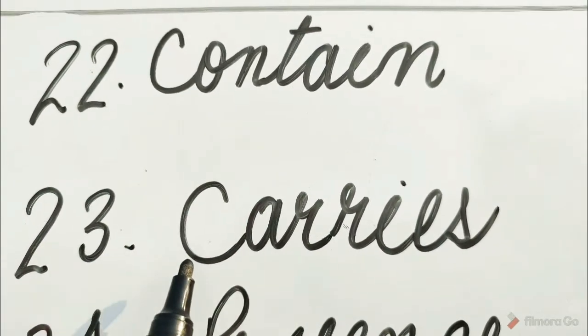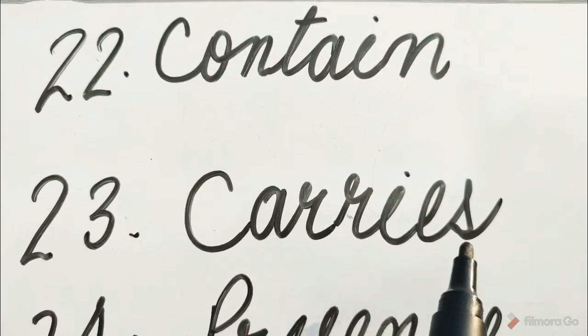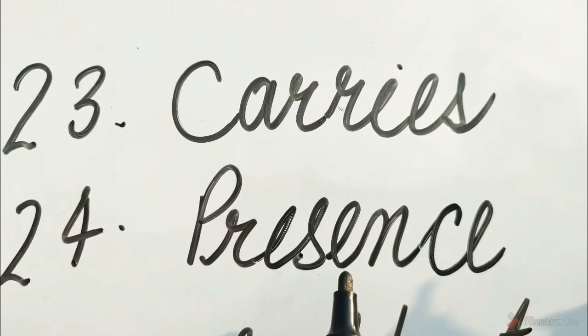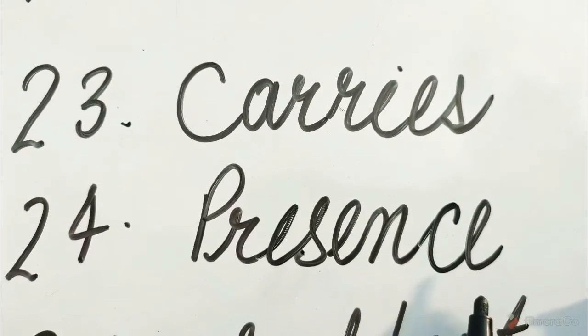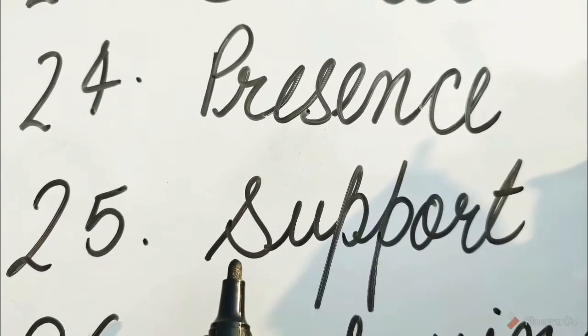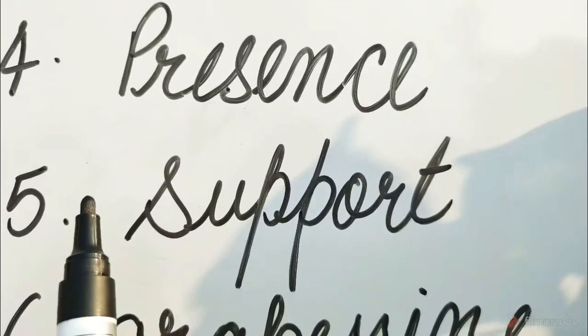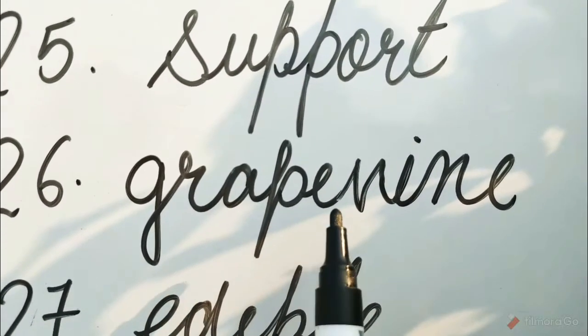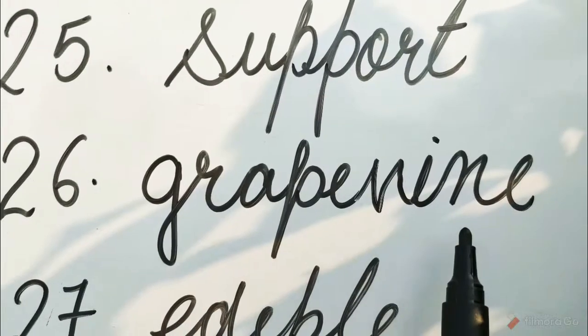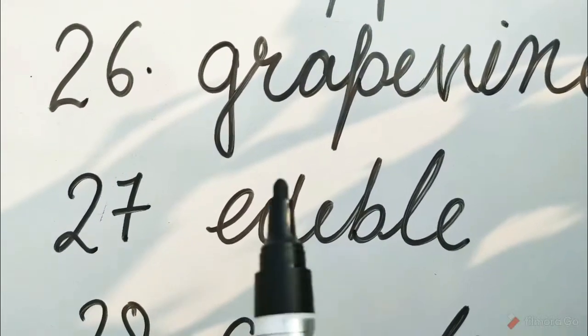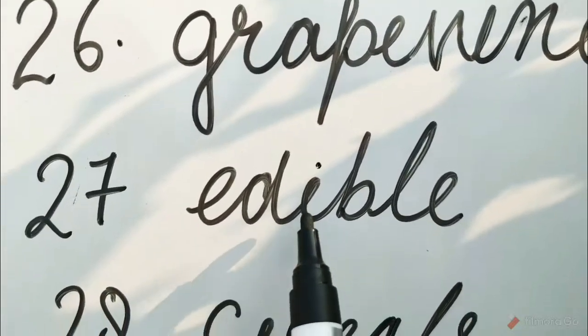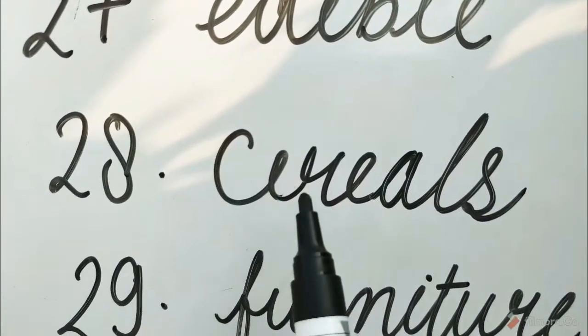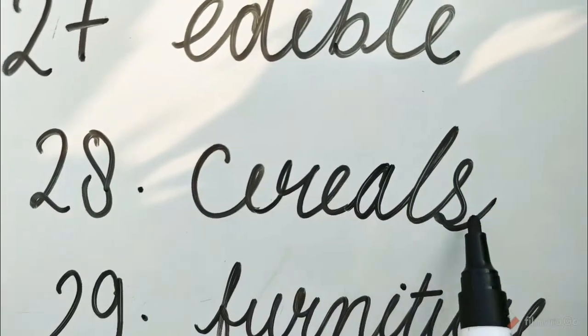Number 23: C-A-R-R-I-E-S, caries. Number 24: P-R-E-S-E-N-C-E, presence. Number 25: S-U-P-P-O-R-T, support. Number 26: G-R-A-P-E-V-I-N-E, grapevine. Number 27: E-D-I-B-L-E, edible. Number 28: C-E-R-E-A-L-S, cereals.